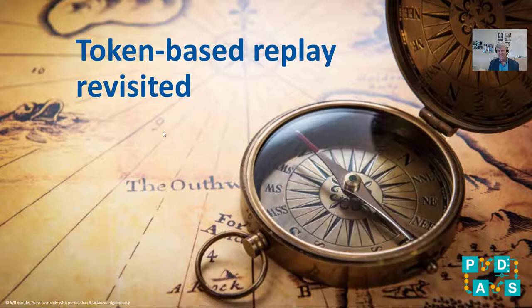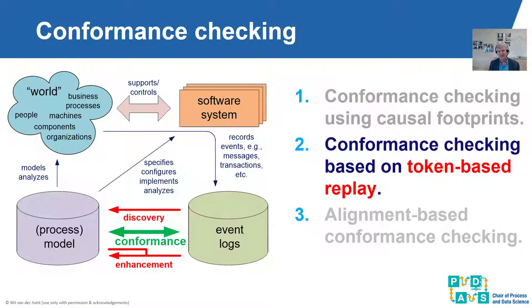In the previous lecture we explained token-based replay: by replaying the Petri Net using events in the log, we can see where it doesn't fit — either we try to consume a token that is not there, or tokens remain at the end. This is one of three techniques in this course. We started with footprints, then token-based replay, and next is alignment-based conformance checking. We first show more token-based replay examples to make the differences clearer.